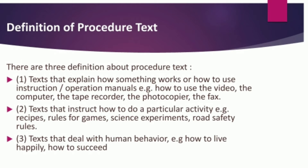There are three definitions of procedure text. The first is the text that explains how something works or how to use instruction or operation manuals — for example, how to use the video, computer, tape recorder, or photocopier. The second is the text that instructs how to do a particular activity — for example, recipes, rules for games, science experiments, and road safety rules. The third is the text that deals with human behavior — for example, how to live happily and how to succeed.